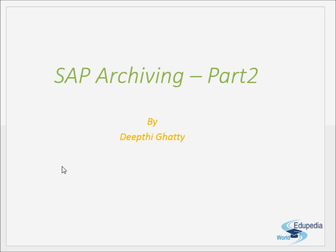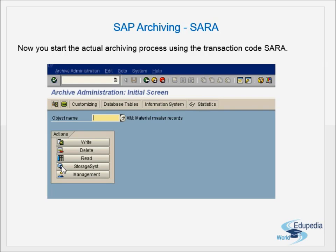The T-code SARA is used for archiving. We start the actual archiving process using transaction code SARA. This is the initial screen of T-code SARA, where we have the object name field and different actions. Let me now talk about archiving in more detail.